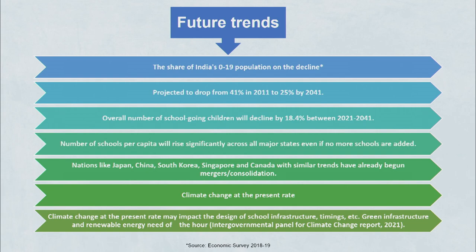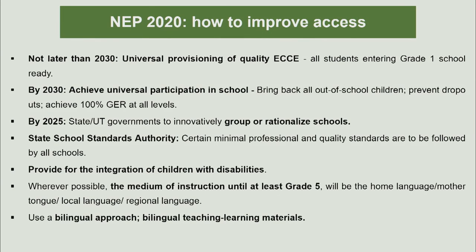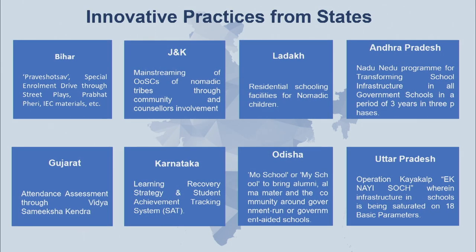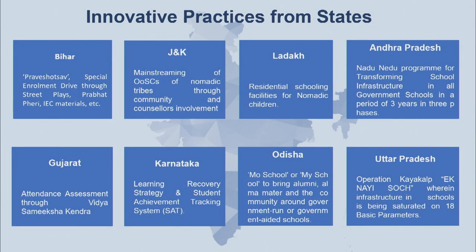Nations like Japan, China, South Korea, Singapore, and Canada with similar trends have already begun addressing this. The major issue with the new education policy is that we should bring back all out-of-school children, prevent dropouts, and achieve 100% gross enrollment at all levels. All state and UT governments need to innovatively rationalize schools. Innovative practices from states: Bihar uses street plays and prabhat ferries to encourage students to come; JNK and Ladakh provide residential school facilities for nomadic children; Andhra Pradesh, Odisha, and Uttar Pradesh are developing infrastructure; Gujarat and Karnataka are taking initiatives on attendance assessment through Vidya Samiksha Kendra and Student Achievement Tracking System.